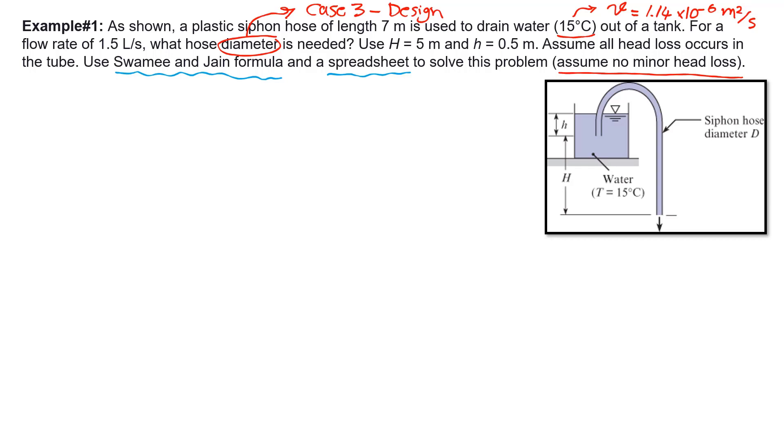The first step is to write the energy equation. I'm going to write energy equation between these two sections, call this section 1 and call this section 2. The energy equation is the summation of elevation head plus all the other heads. Instead of HL or head loss, I include the Darcy-Weisbach equation.